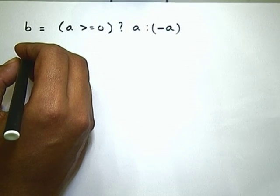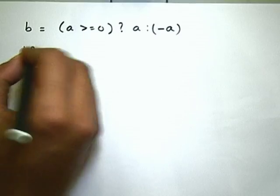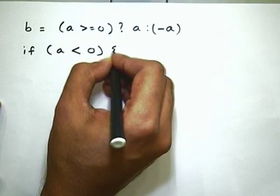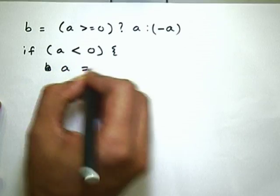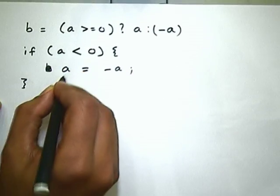Or, if you did not need a new variable b but could clobber the old variable a, you could just say 'if (a < 0) a = -a'. This destroys the old value of a and stores the absolute value in a itself. So the else clause can be missing — it is not compulsory.